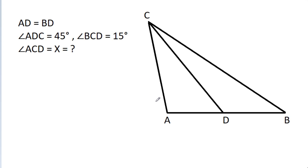In this video, we have given that AD is equal to BD and angle ADC is 45 degrees, angle BCD is 15 degrees, and angle ACD is X. We have to find the value of X.